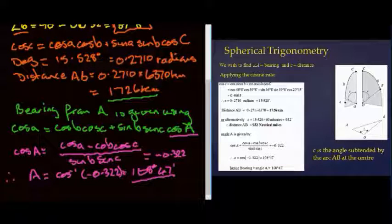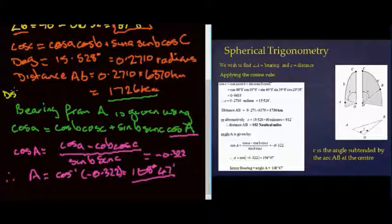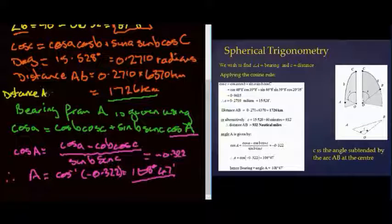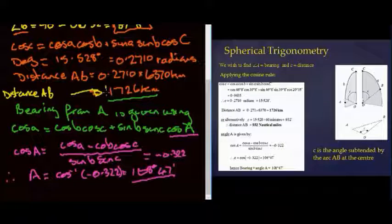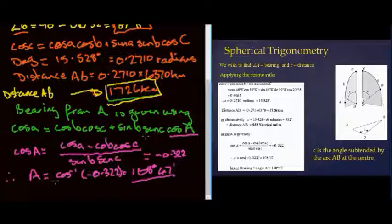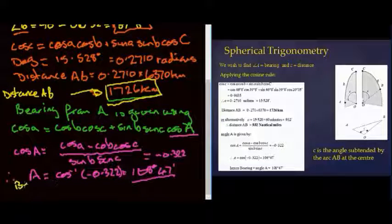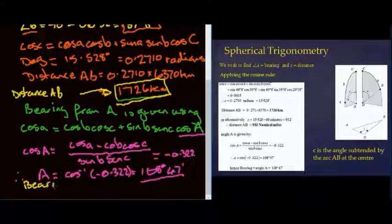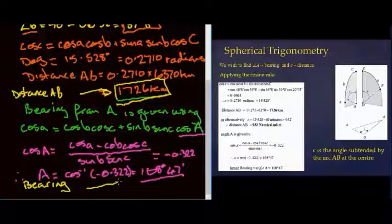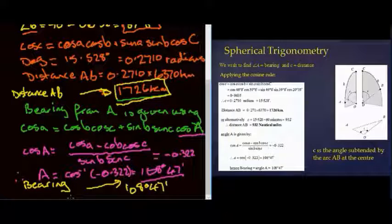So now what I've found is I have an answer for the distance AB. And the bearing is 108 degrees 47 minutes. That ends this short tutorial on spherical trigonometry.